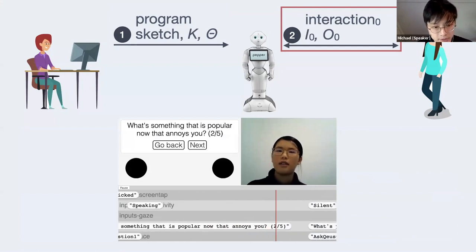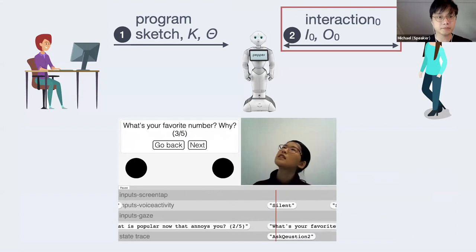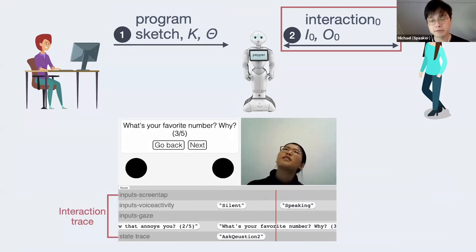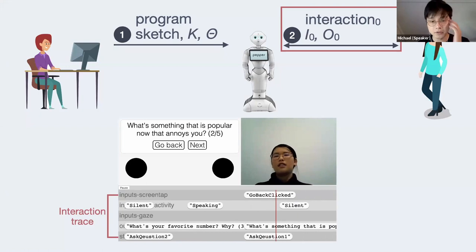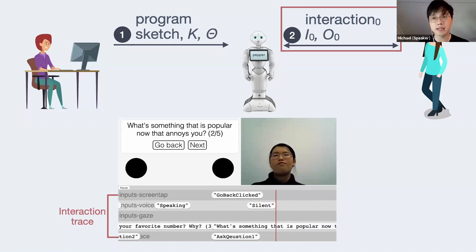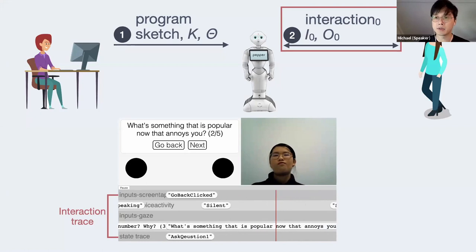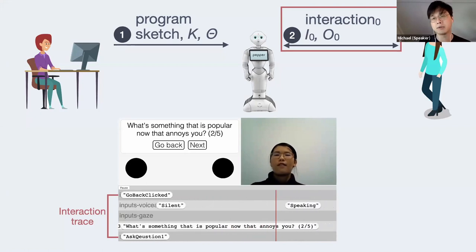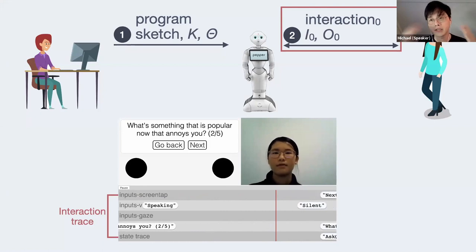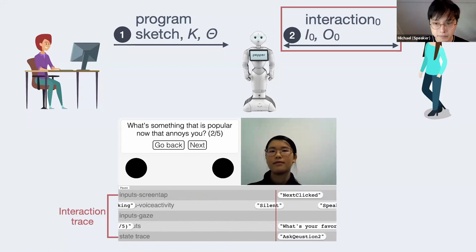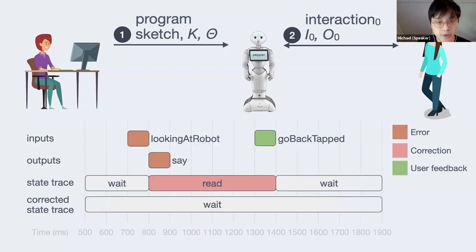When the system runs, it collects traces like FSM inputs, outputs, and states that occurred during the interaction. Because the sampled values for holes are often not tuned correctly, the system will likely make some mistakes and people usually get frustrated — for instance, the robot should have waited for the person to finish speaking, but moved on. We observed two types of transition errors: the incorrect transition error, where the robot mistakenly moves to the next state — for example, the robot thought the person finished the interaction and triggered the next thing.